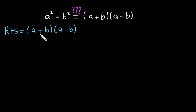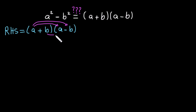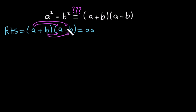Here we will use the distributive law: a multiplied by a, then a multiplied by b, then b multiplied by a, then b multiplied by b. So a multiplied by a gives a squared, and a multiplied by minus b gives minus ab, because one is positive and one is negative.